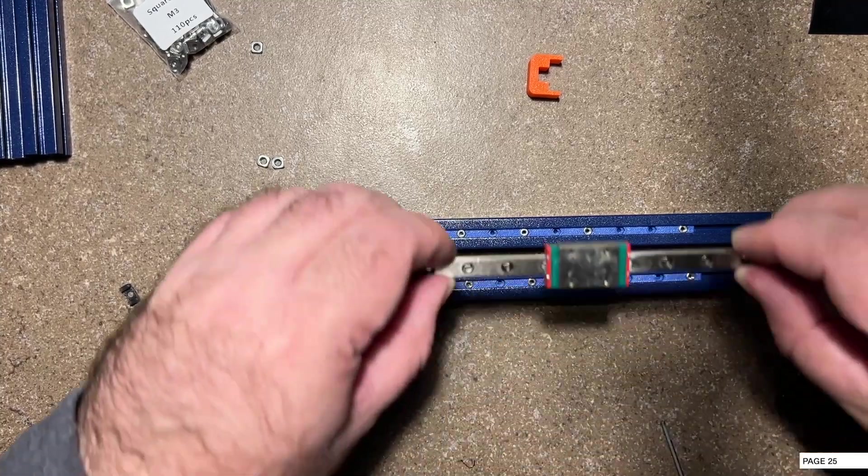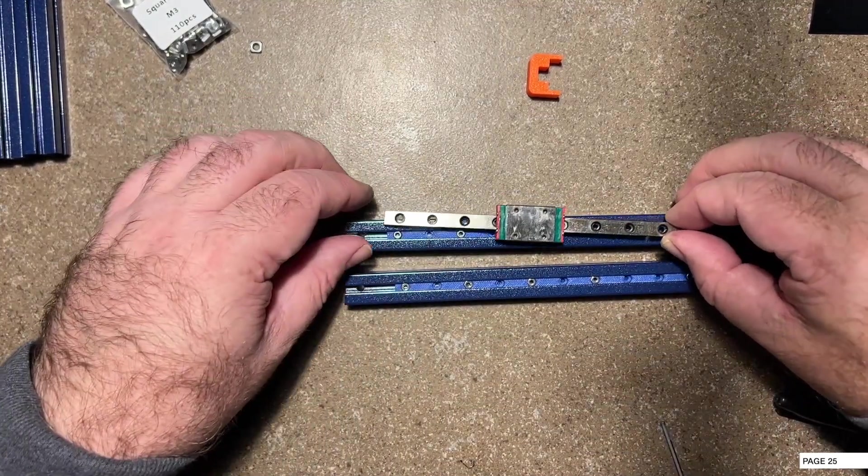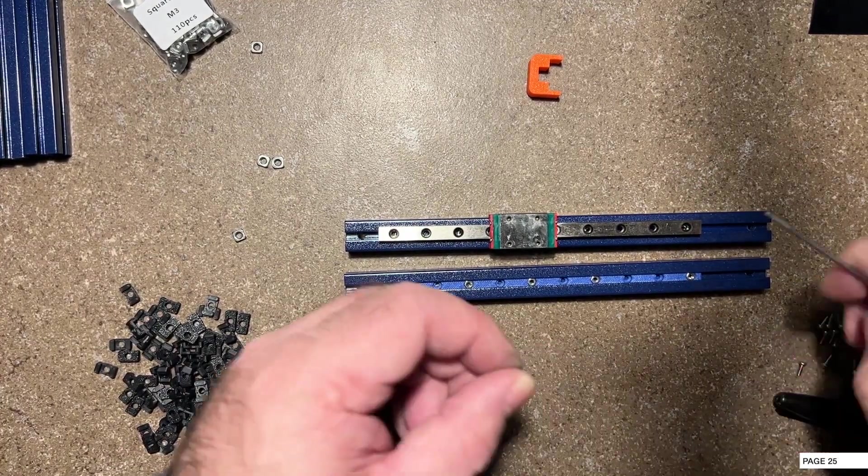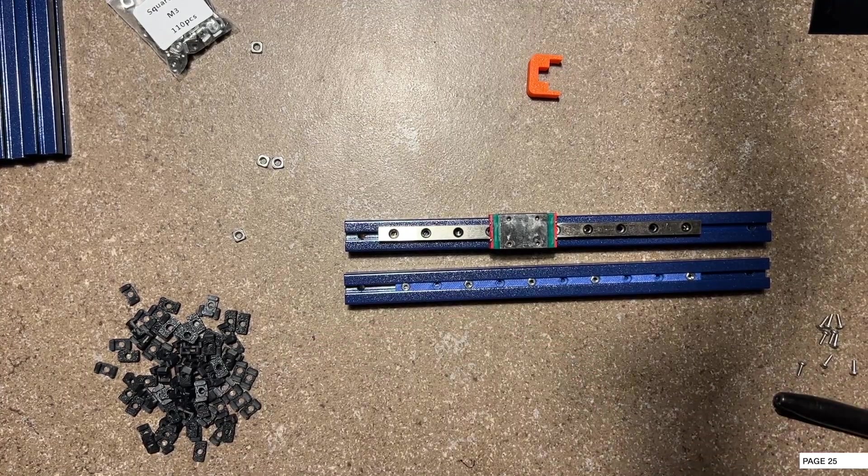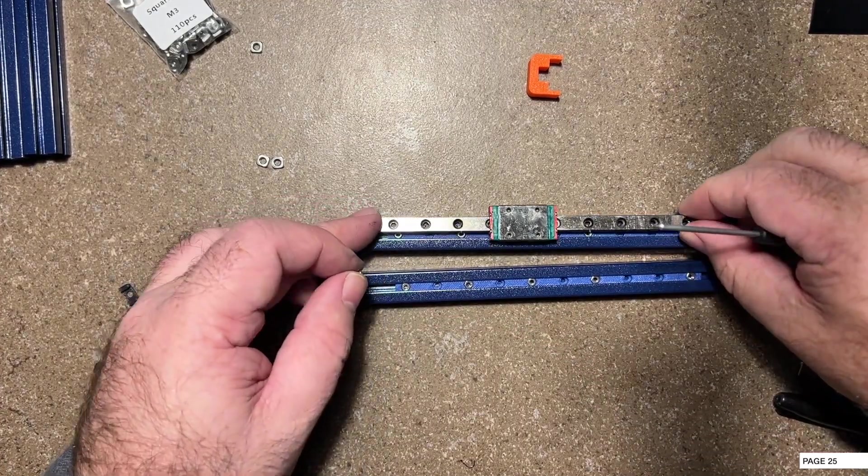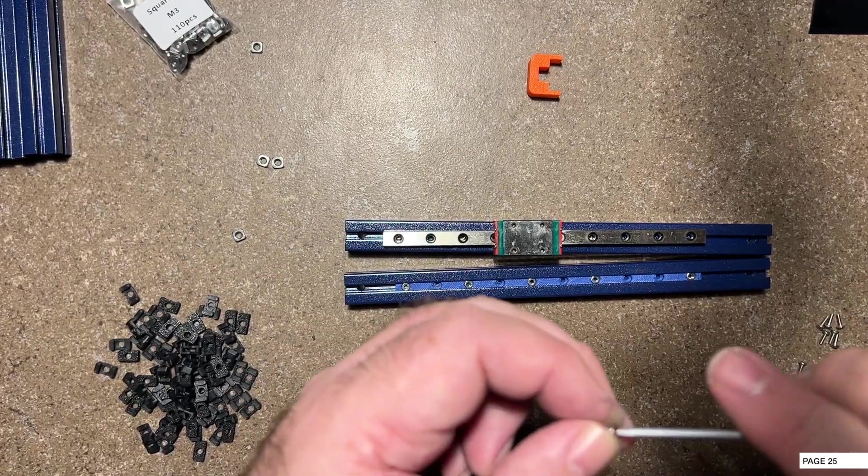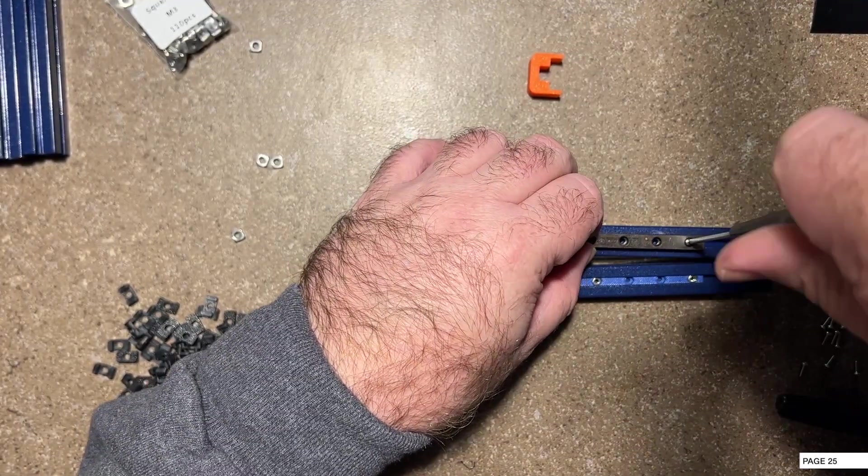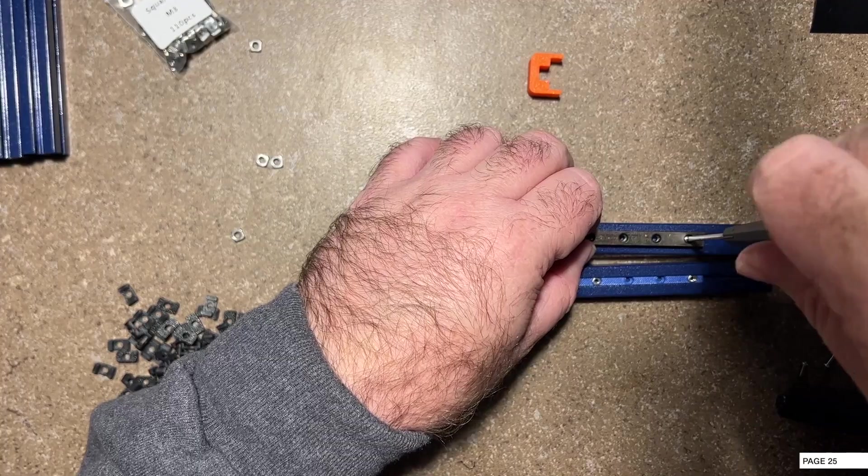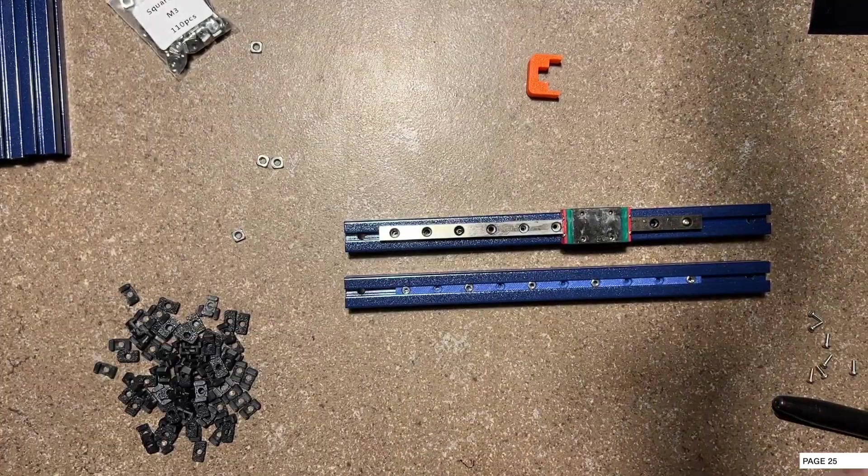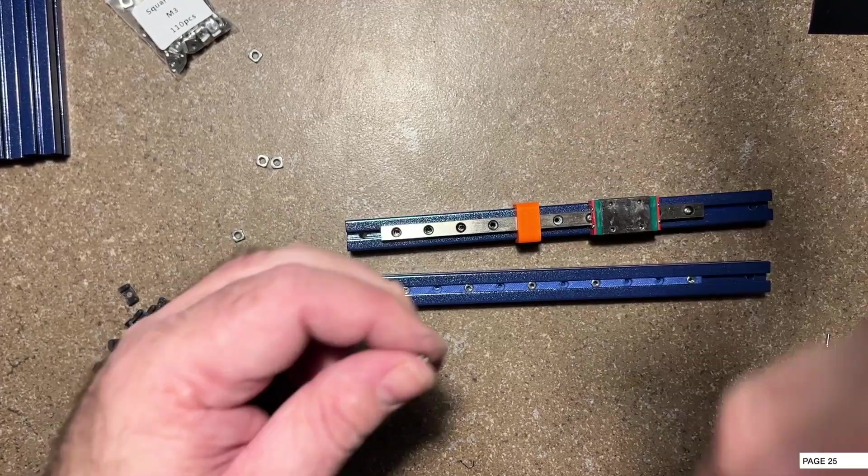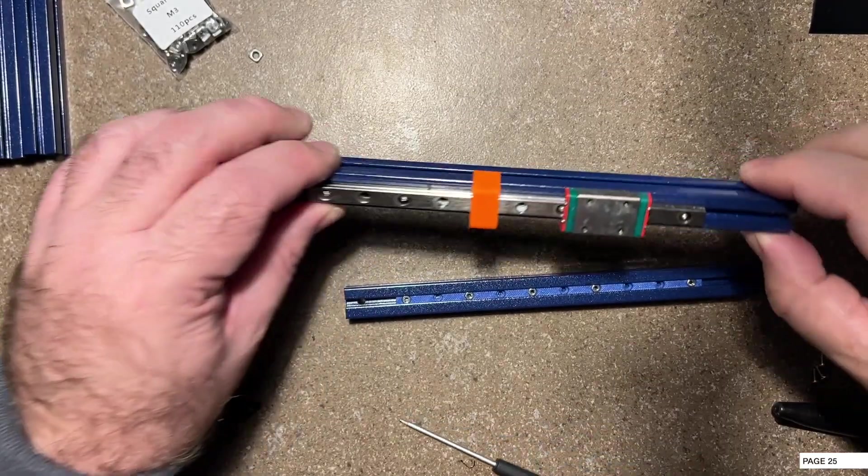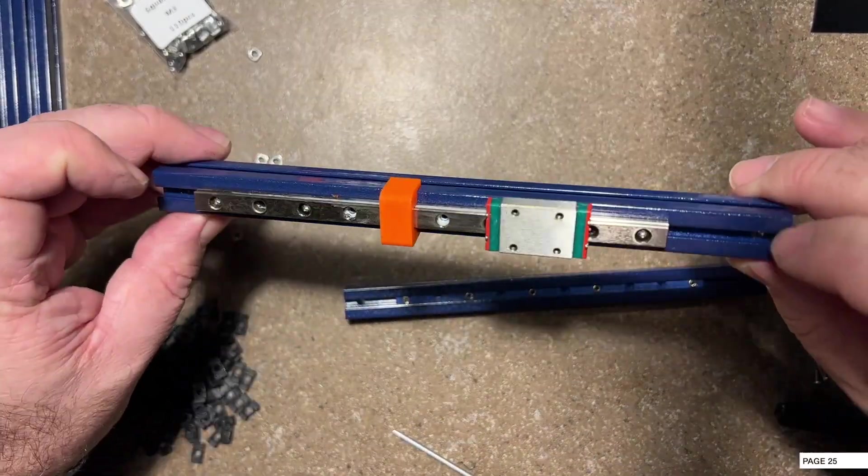Now I'm going to install the rails onto the extrusion here. Same drill as before. We're eventually going to be able to adjust the height on these. So don't put the screws in super tight yet. Just leave a little adjustment in there. You're going to go every other screw except for the ends here. It's a good idea to make sure they're nice and centered as you go. Once again, make sure that you're putting them in with the holes facing up.